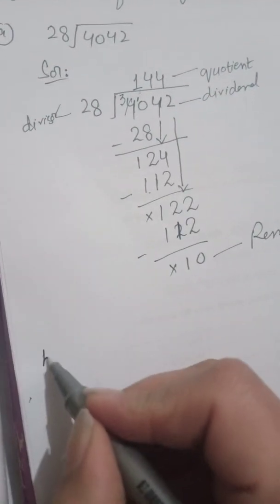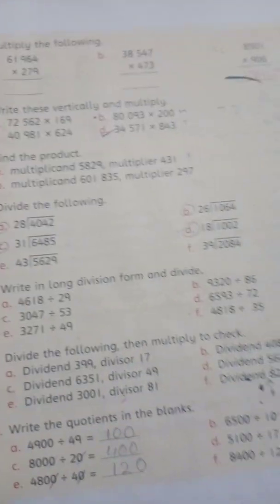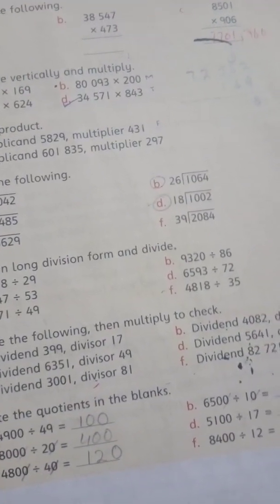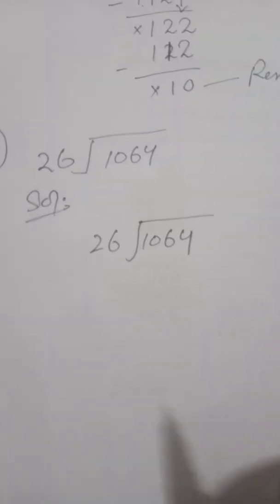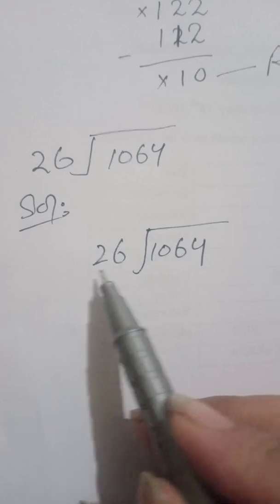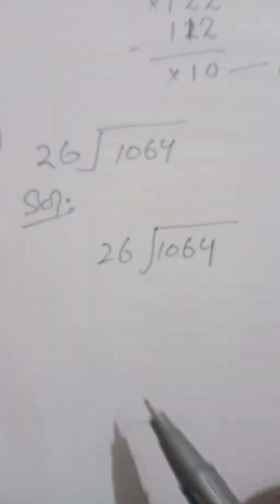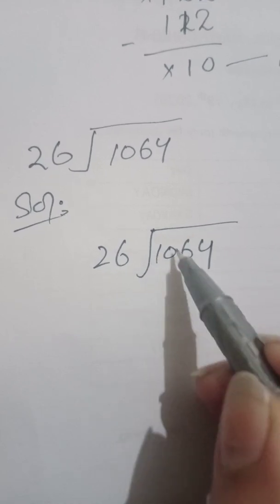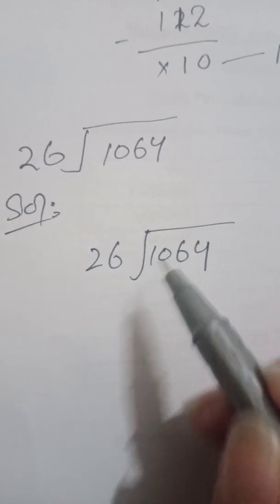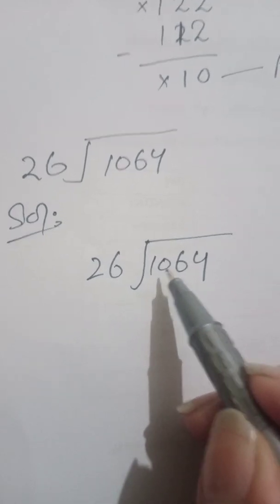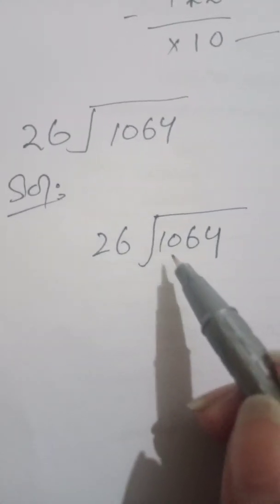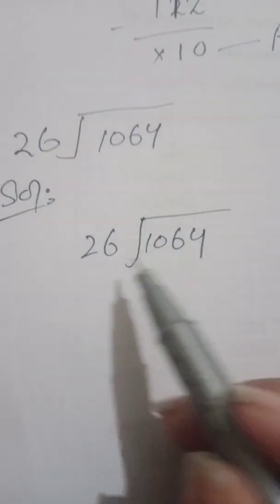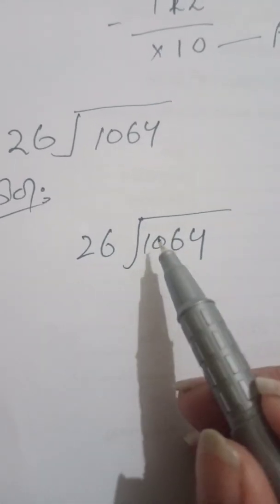Now I will solve Part B for you, which is 1064 divided by 26. The rule is: since the divisor has two digits, we take two digits from inside too. That gives us 10. But 26's table doesn't fit into 10, so we take a third digit as well, making it 106.